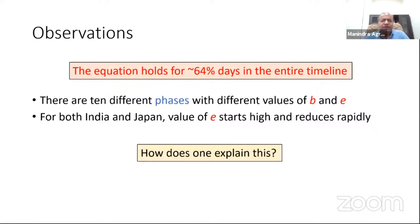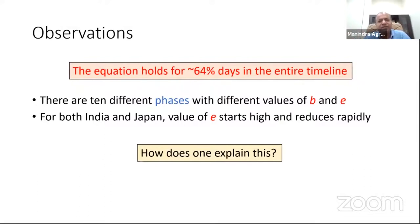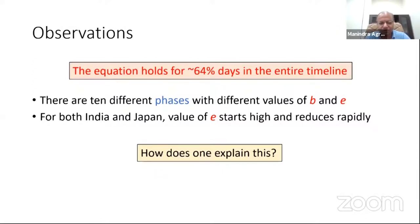The big questions are: why does this linear relationship hold for so many points? What is conveyed by the B and E values — especially E, which varies very widely? And why do some days not satisfy the relationship? All of these questions lead us to our model — the SUTRA model.